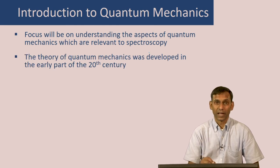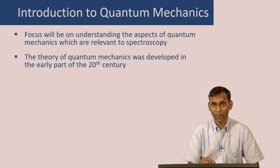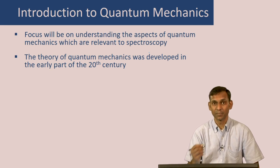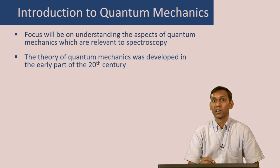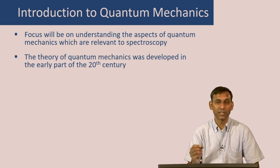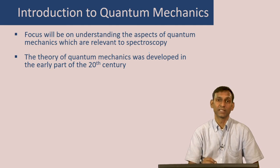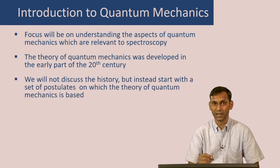This theory of quantum mechanics was developed in the early part of the 20th century, about 100 years back. Before that, in the late part of the 19th century, there were certain experiments like black body radiation, the photoelectric effect, and the discrete spectrum of atoms like hydrogen, which could not be explained by the existing theory of that time. And that prompted the development of this theory.